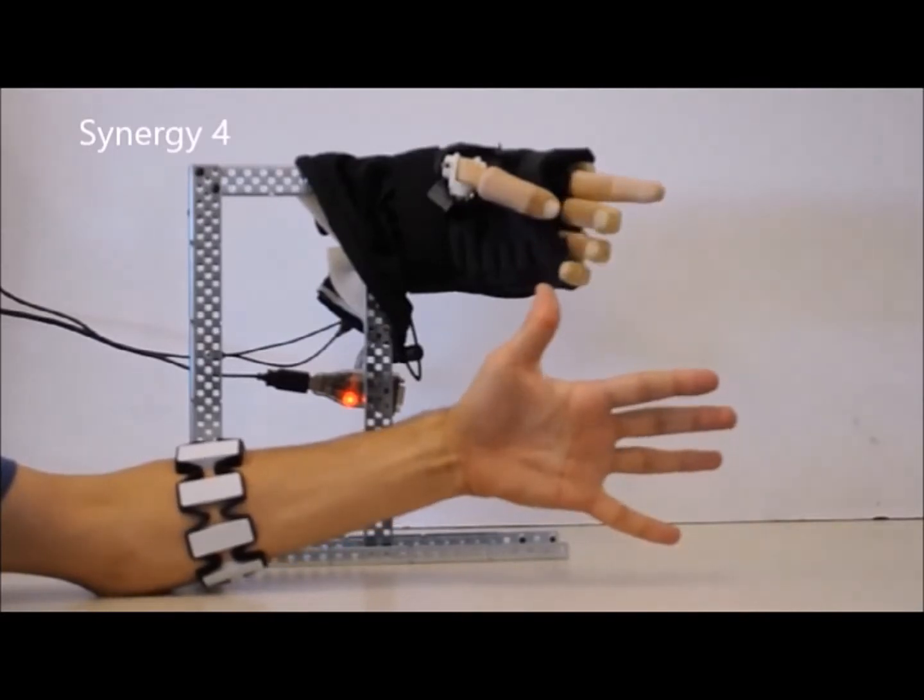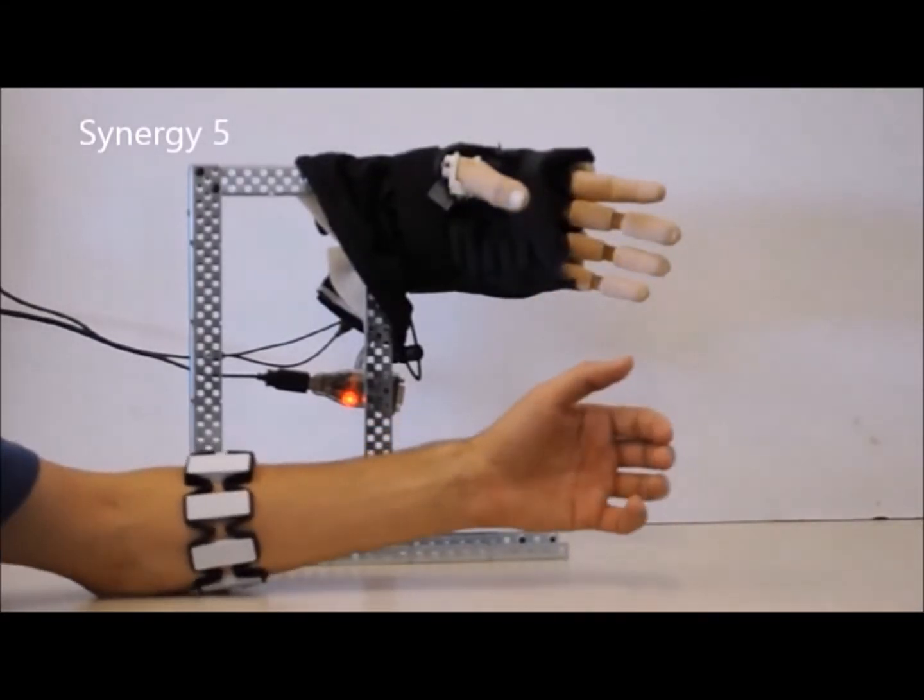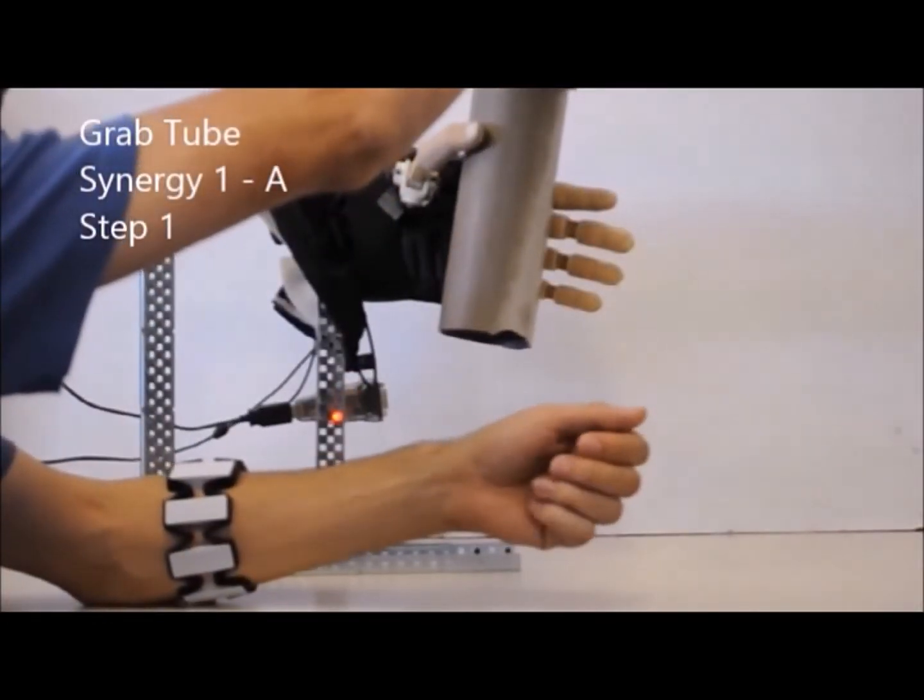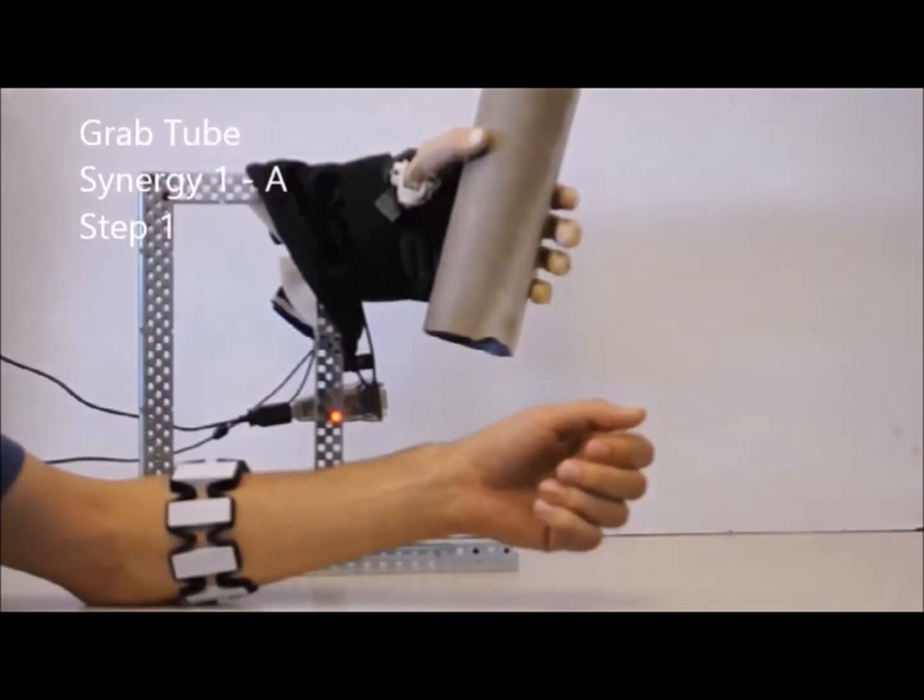Each synergy is basically the trajectories defined for each of the actuators from the start point to the end point. The first synergy is composed of four intermediate steps from the start to the end point.